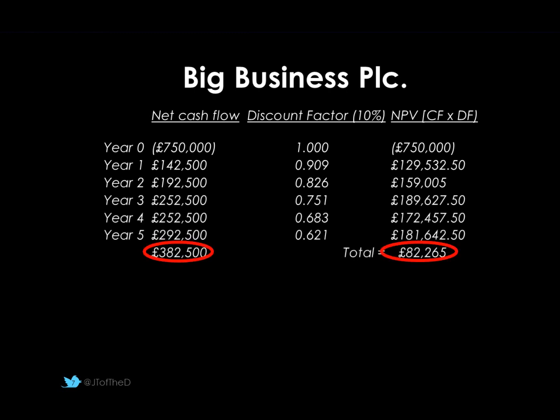And so it continues. By the time we get to year five, we end up with a completed table. On our net cash flow — not considering net present value but the actual profit we'll have at the end — that would be £382,500. However, we could have put it in the bank at 10% and grown that £750,000 instead. Our net present value therefore shows us the relative difference. The figure circled on the right is £82,265 — that's just the total of the cash outflow in year zero plus all the cash inflows expected. If I took £750,000 and placed it in the bank at 10%, I would have earned £82,265 less. So this project has a net present value of £82,265.